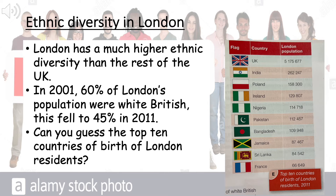In 2001, we can see by the ethnic group of white British how much ethnic diversity has changed. In 2001, 60% of London's population were white British. But by 2011 it was 45%, so less than half the people living in London are actually white British.